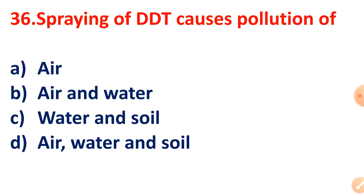Question 36: Spraying of DDT causes pollution of what? Spraying of DDT causes pollution of both air, water, and soil — so it causes air pollution, water pollution, and soil pollution.